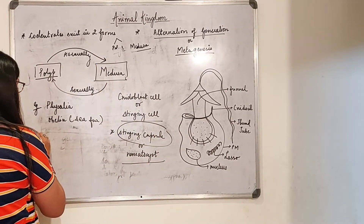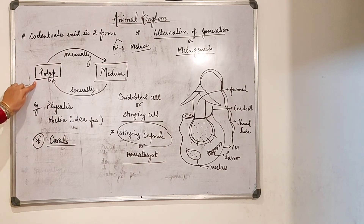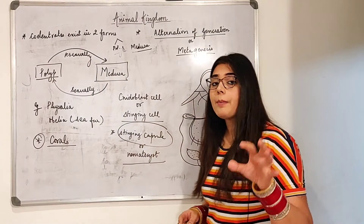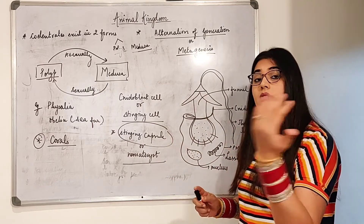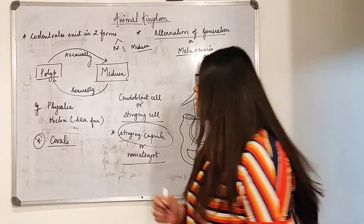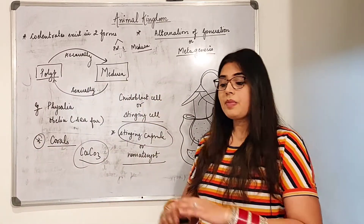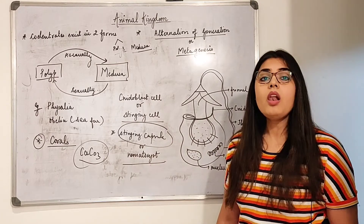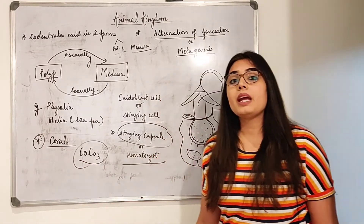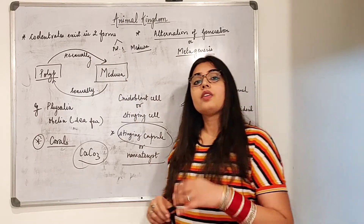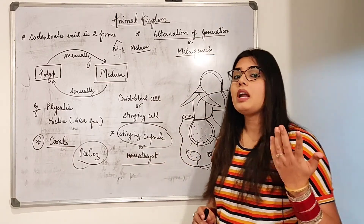The last topic is corals. Only the polyp forms of Cnidaria, present deep inside the oceans, release an outer layer from their body. This outer layer is made up of calcium carbonate — CaCO3 — which makes them very beautiful and colorful, giving the seabed an attractive look. These are living beings, and the beautiful coral formations are made from the polyp stages of Cnidaria due to the release of calcium carbonate on the outside of their body.